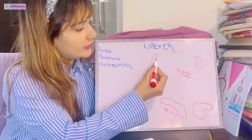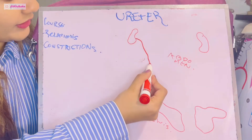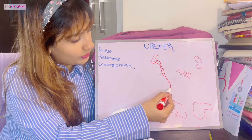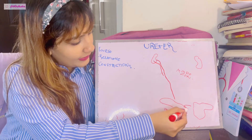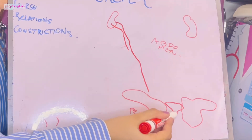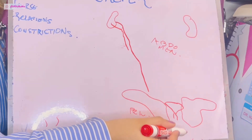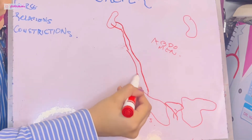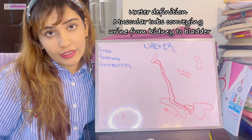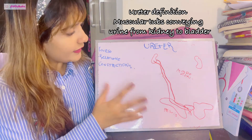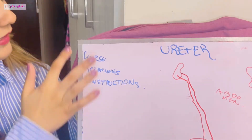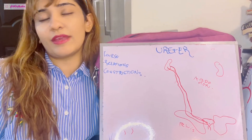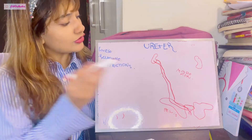The ureter conveys urine from the kidney — it begins as the renal pelvis, goes all the way down to the bladder, which lies inside your pelvis. From the bladder, through the urethra, urine passes out. So the ureter is essentially a muscular tube conveying urine from the kidney to the bladder. The important things we need to learn today are its course, its relations, and its constrictions — that's exactly what will be asked in your exam.